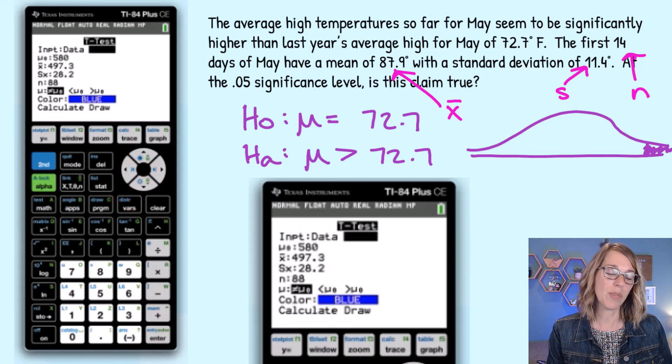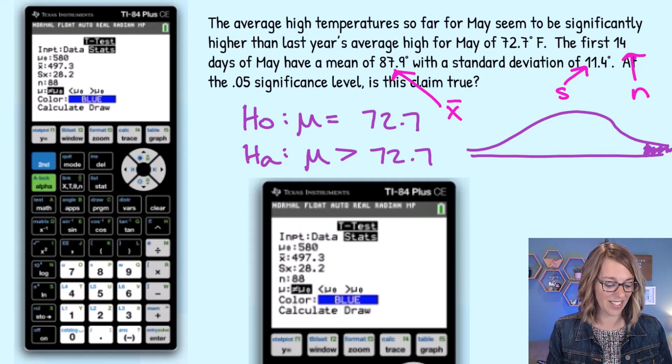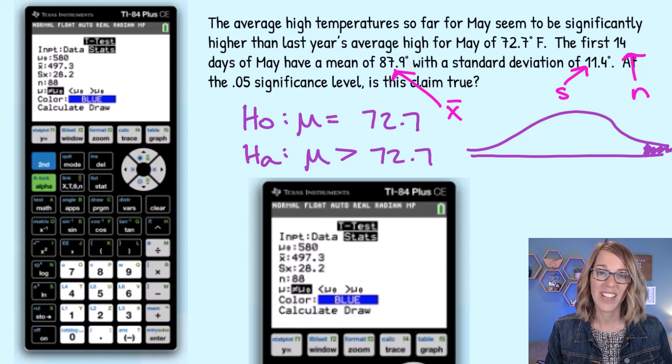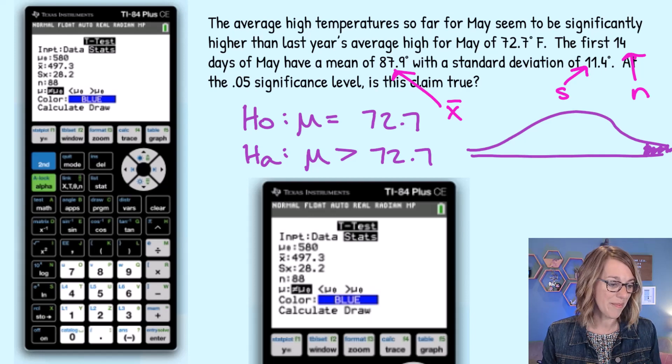Now it gives me the option of data for raw data which we don't have or stats. We want stats highlighted. If yours isn't, arrow over to stats and hit enter. Now we arrow down and type in the information for this particular problem.